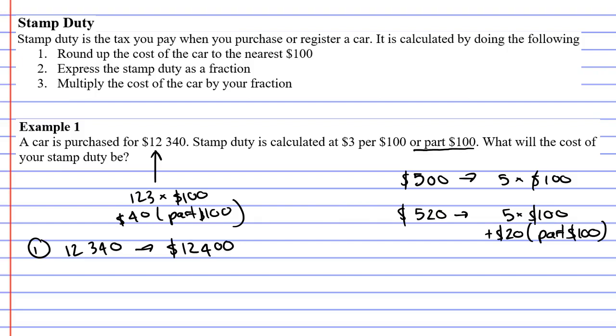Now a lot of you will look at that and say, well, really shouldn't we round it down to $12,300? But the rule with stamp duty is to round it up, and that way the government will get more money from you, as you can just imagine.